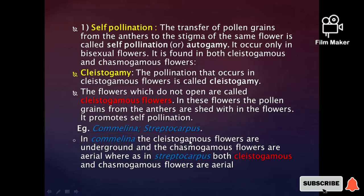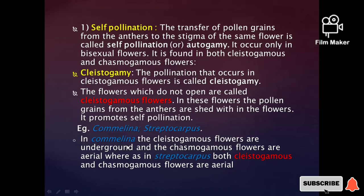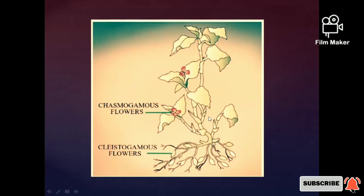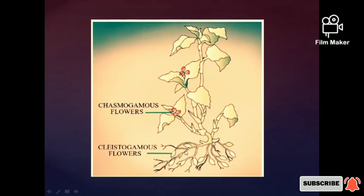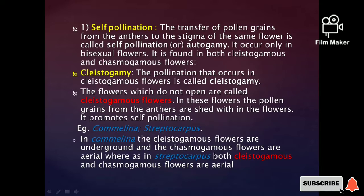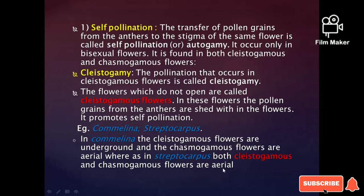The cleistogamous flowers are underground, while the chasmogamous flowers are aerial. In some species, both cleistogamous underground flowers and chasmogamous aerial flowers are present.